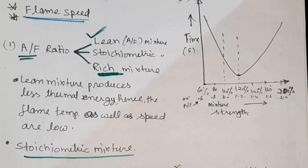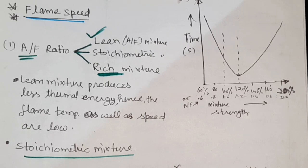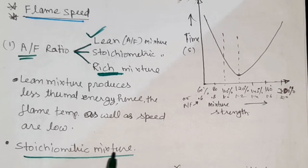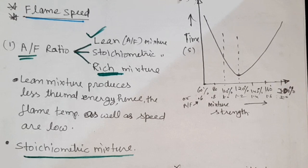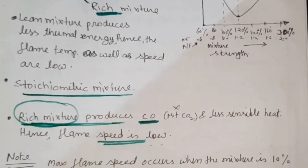In the stoichiometric or chemically correct mixture, carbon monoxide will be produced, meaning there is no complete combustion of fuel. In the rich mixture, fuel quantity is higher compared to the chemically correct mixture, hence flame speed is low in rich mixture as well.